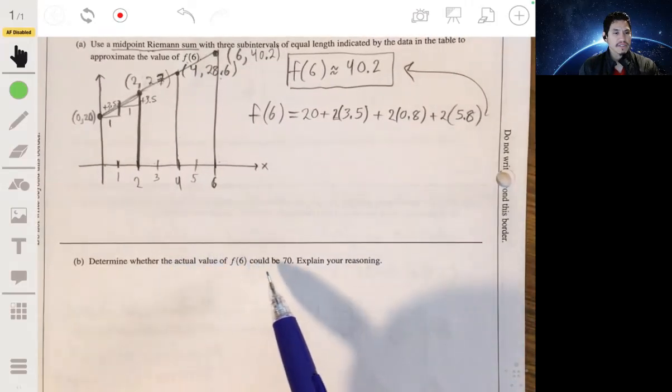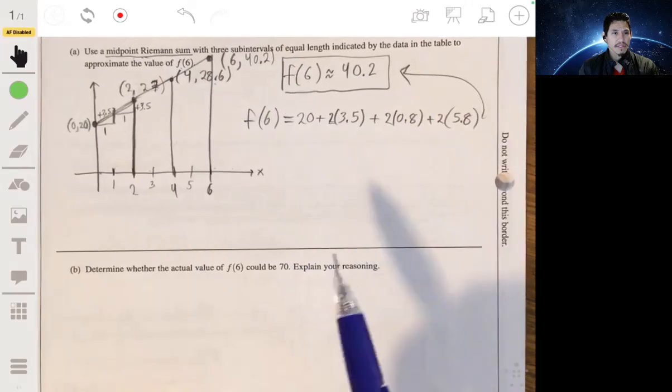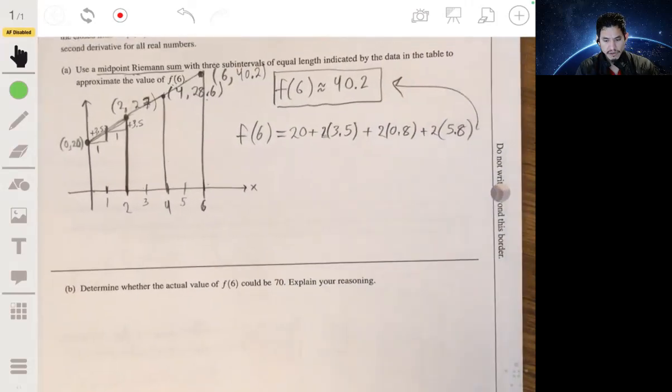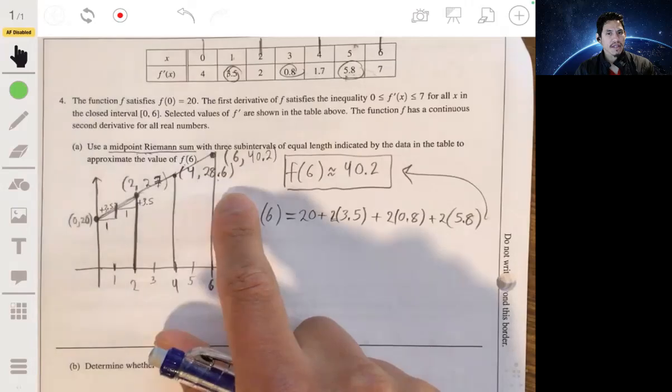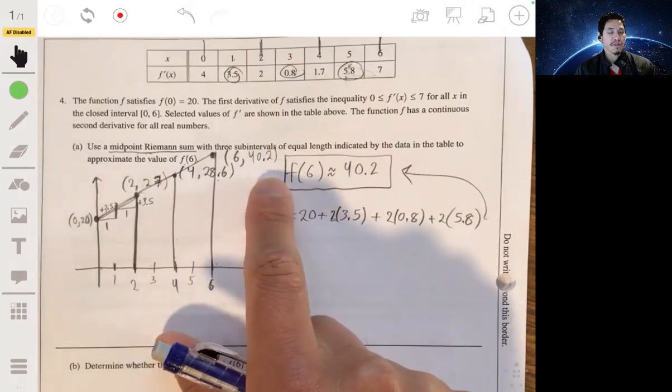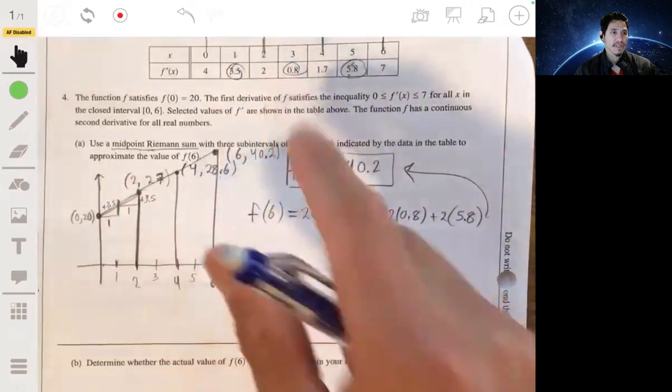Determine whether the actual value of f of 6 could be 70. Explain your reasoning. Okay, so let's go back to this. And remember that this is just an estimation. We don't know that that's going to be 40.2. We're given limited information.